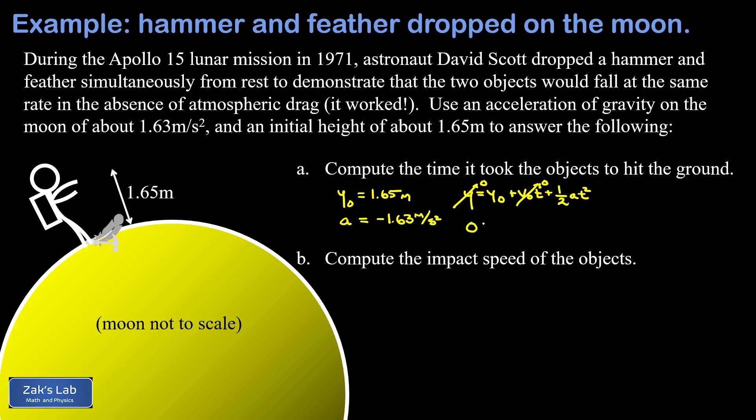Our initial velocity is going to be zero because we release the objects from rest. So we can plug in the rest of our numbers and we get zero equals 1.65 and then minus, just using the minus sign in that acceleration term, minus one-half times 1.63 times t squared.